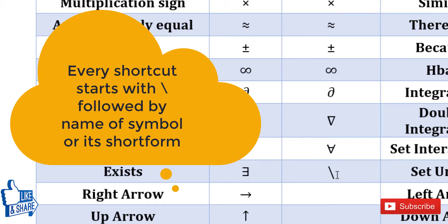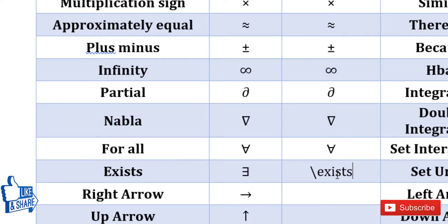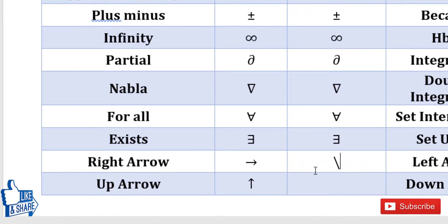For exists, E-X-I-S-T-S and press space. For right arrow, you can simply press minus sign and then greater-than sign, or you can press backslash rightarrow and then press space. So this is for right arrow. And for up arrow, it is simple—uparrow and then press space.